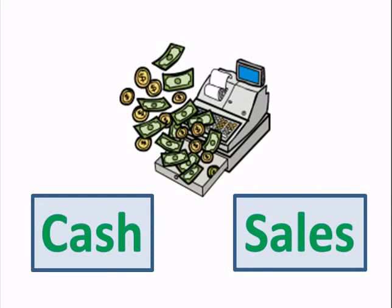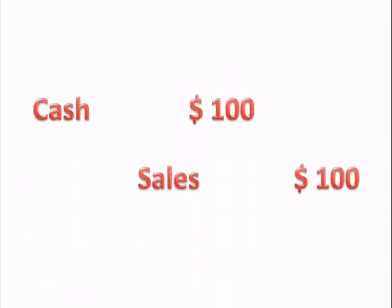Let's write a journal entry for the $100 transaction. We would debit cash for $100 and credit sales for $100. Double entry accounting is the basis of the journal entry and keeps the journal entry balanced.